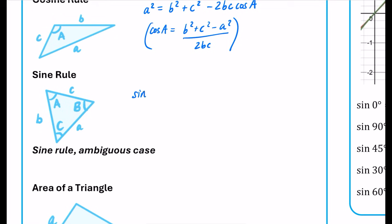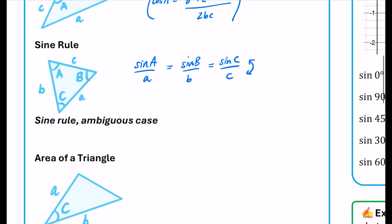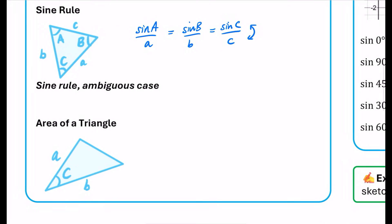For the sine rule, we have sine A over a equals sine B over b. You only need two of these, but it's true for all three angles and their opposite sides. With the sine rule we can also flip it over and take the reciprocal, giving us a over sine A, b over sine B, and c over sine C.